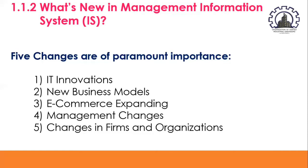The next important change is new business models. For instance, the emergence of online video services like Netflix for streaming, Apple iTunes, and Amazon for downloading video has forever changed how premium video is distributed and even created. Netflix in 2016 attracted more than 75 million subscribers worldwide to what it calls the Internet TV revolution. Netflix has moved into premium TV show production with original series such as House of Cards and Orange is the New Black, challenging cable and broadcast producers of TV shows.